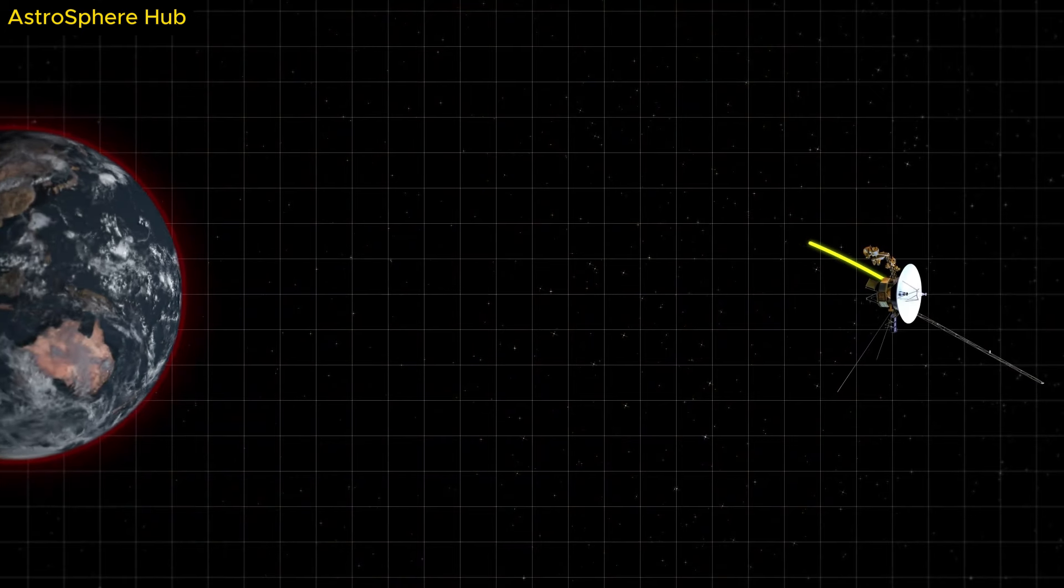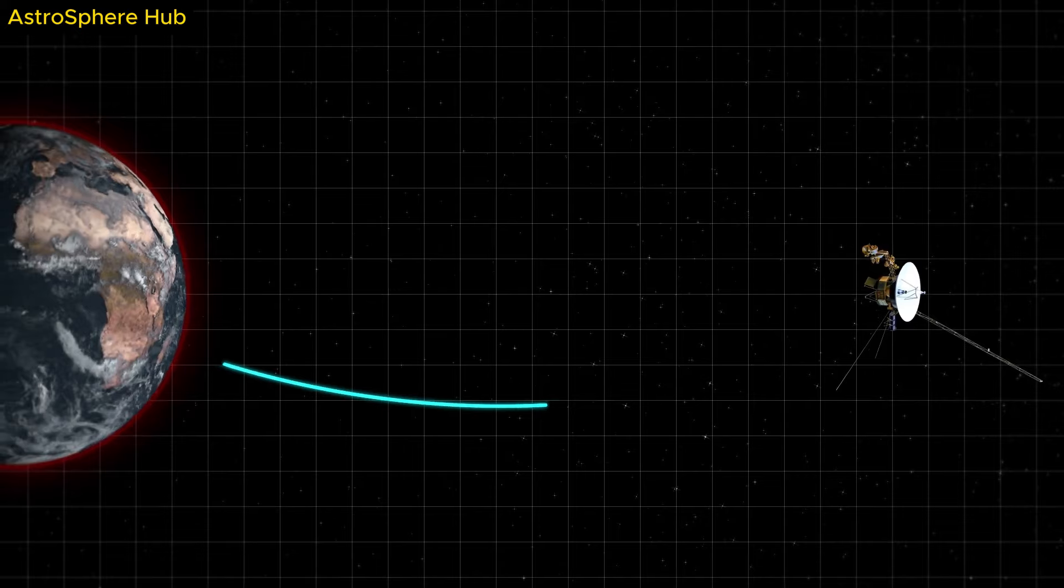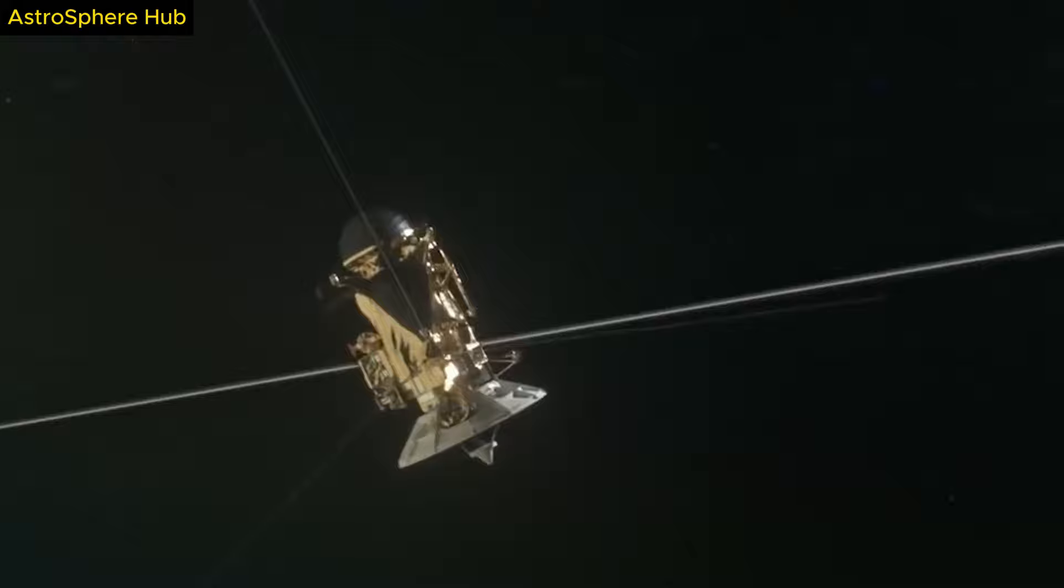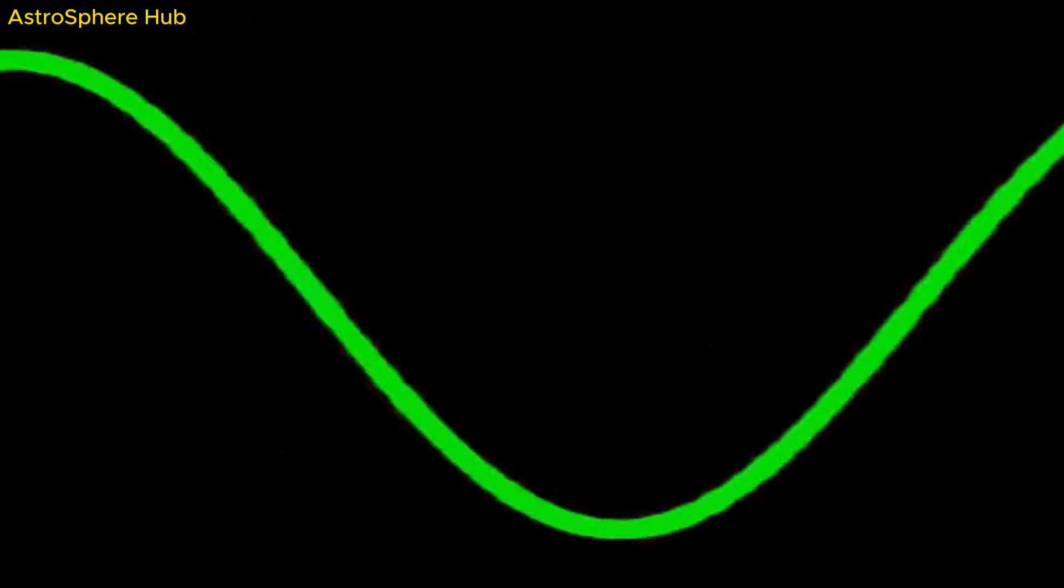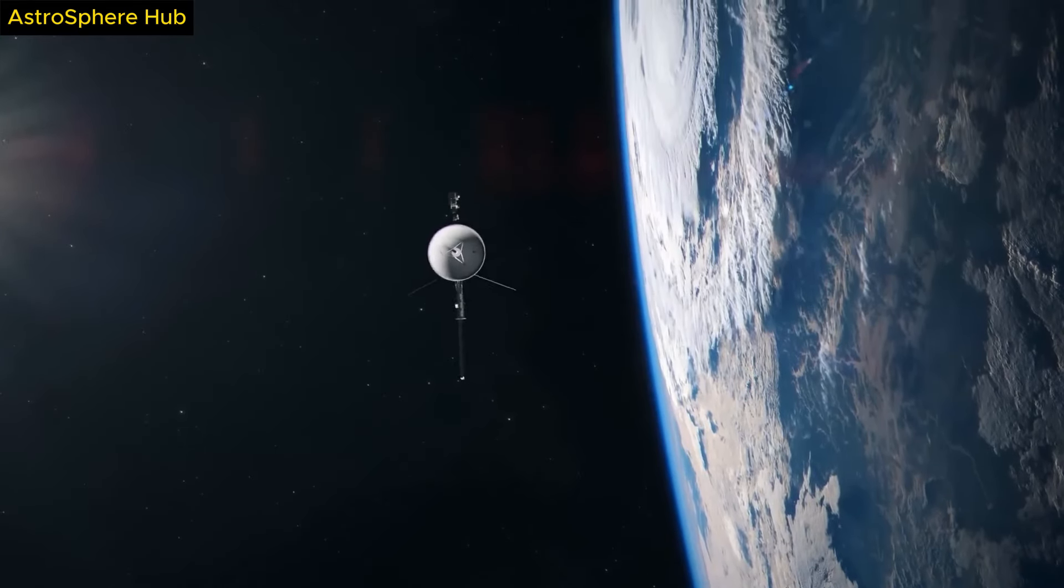Aside from the instruments, the probes have radioisotope thermoelectric generators. These generators use plutonium-238 to power the craft, and keep them warm and have allowed the probes to extend their missions for such a long time. However, they are starting to become weaker and weaker, and one day will stop operating altogether, ending the Voyager missions forever. That day could come very soon.